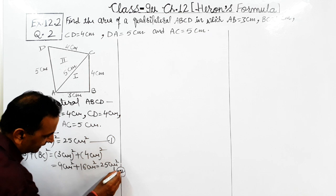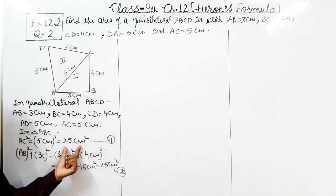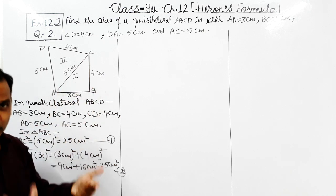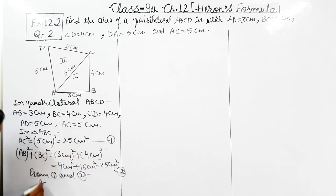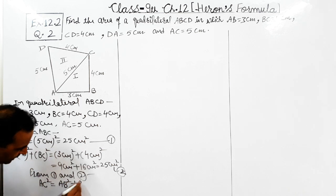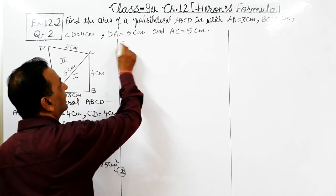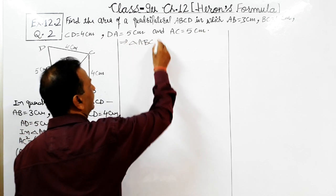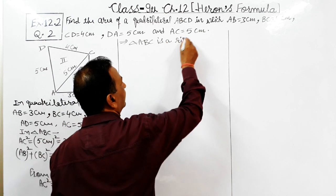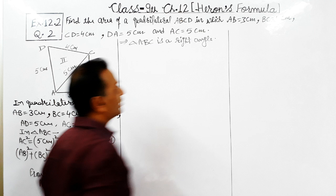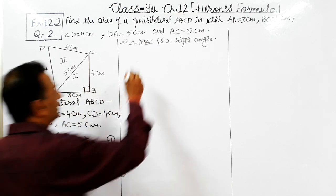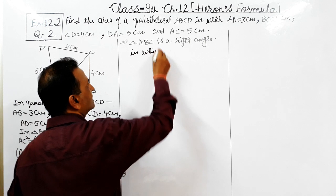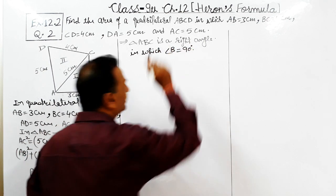Checking both results, we can see that AC square equals AB square plus BC square, which means 3, 4, 5 forms a Pythagorean triplet. This implies triangle ABC is a right triangle, in which the angle opposite to the longest side AC — that is angle B — is a right angle equal to 90 degrees.